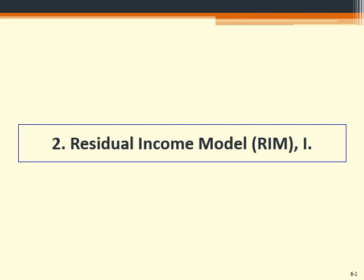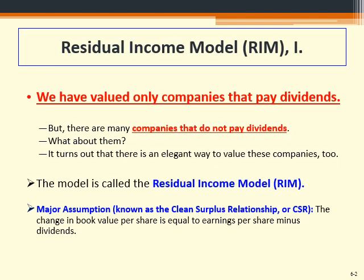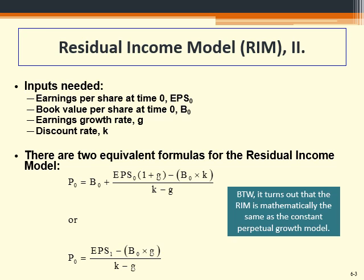The residual income model uses another variable: earnings per share. Every company ends up with a net income, and when you divide net income by the number of shares you get the earnings per share. The model has two equivalent forms — either one gives you the same mathematical result.